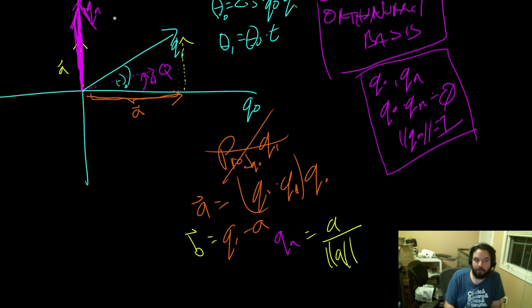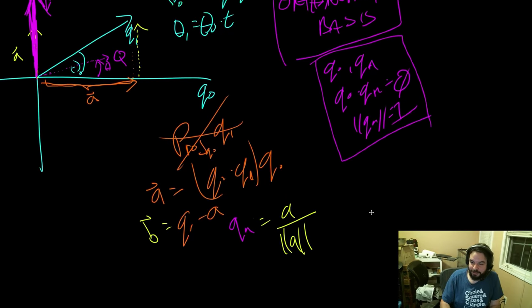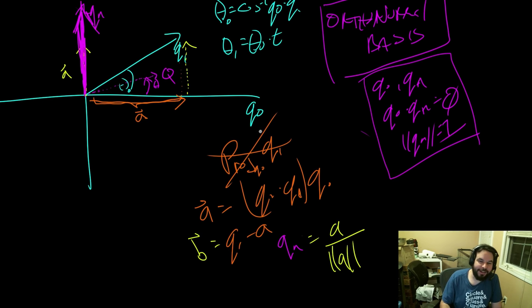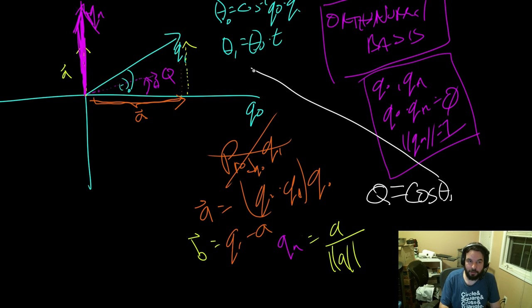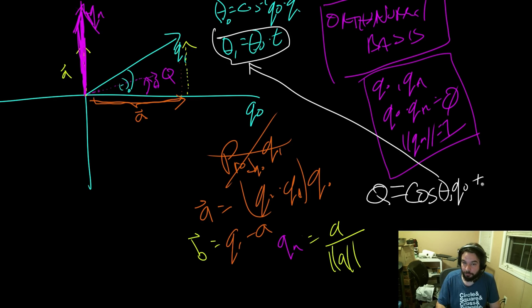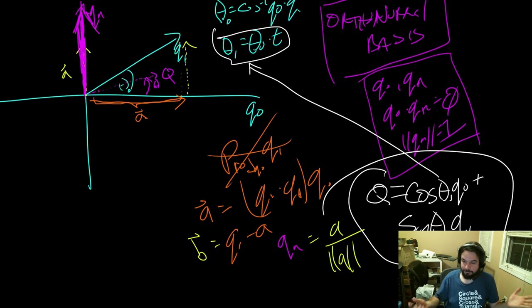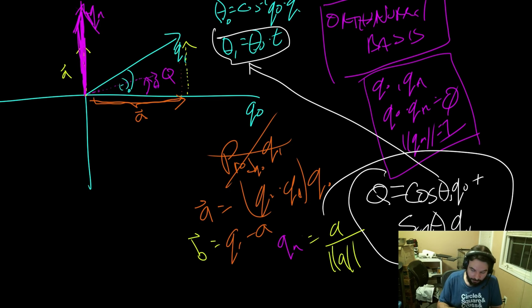Now we have q0, Qn, and a theta. If we want to find our output Q, it's just: cosine(θ1) * q0 + sine(θ1) * Qn, where θ1 is the input theta multiplied by t — the percentage between the two vectors. That's it. That's SLERP.